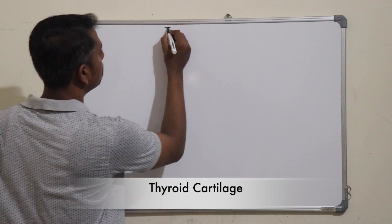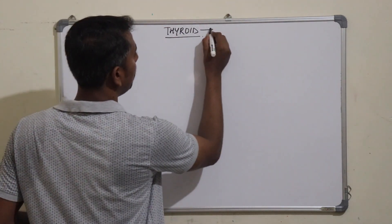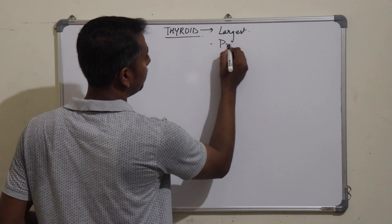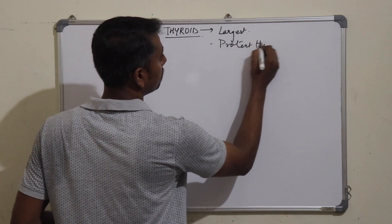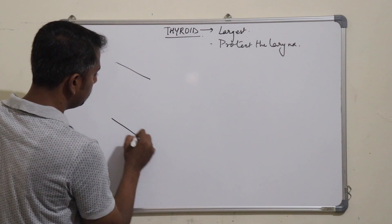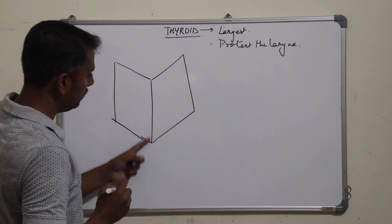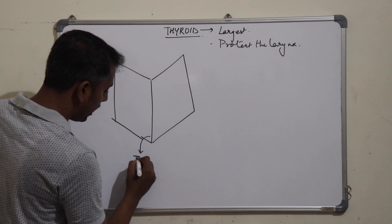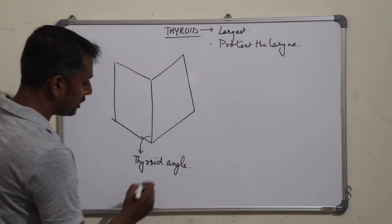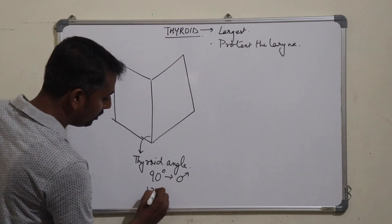The first cartilage is the thyroid cartilage, which is the largest laryngeal cartilage. Its function is to protect the larynx. The thyroid cartilage consists of two laminae which meet in the front at an angle, known as the thyroid angle. This thyroid angle is approximately 90 degrees in males and approximately 120 degrees in females.